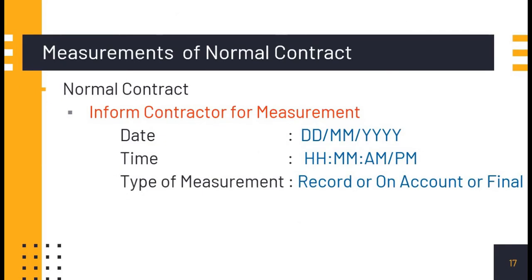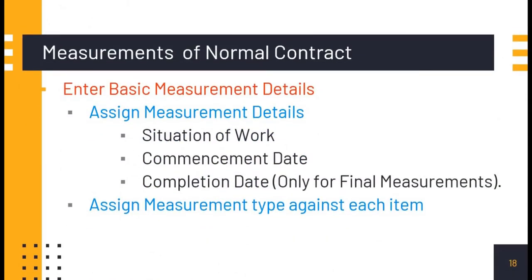First, we have to inform the contractor for measurement — specifying the date, time, and type of measurement, that is record measurement, on account measurement, or final measurement. After informing the contractor and taking measurements at site, we come to the computer to enter measurement details. In 'Enter Basic Measurement Details,' we assign measurement details — situation of work, commencement date, completion date — and assign measurement type against each item.